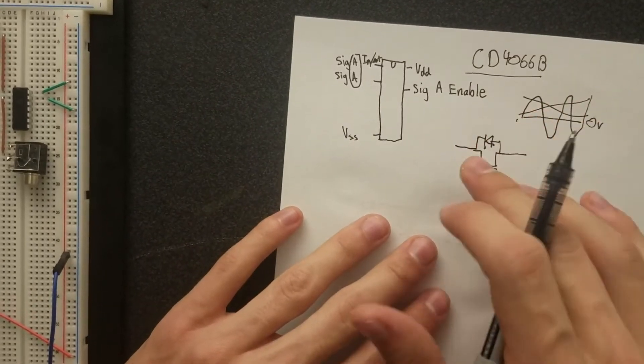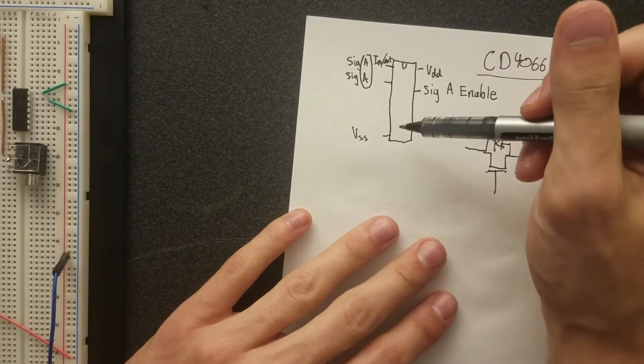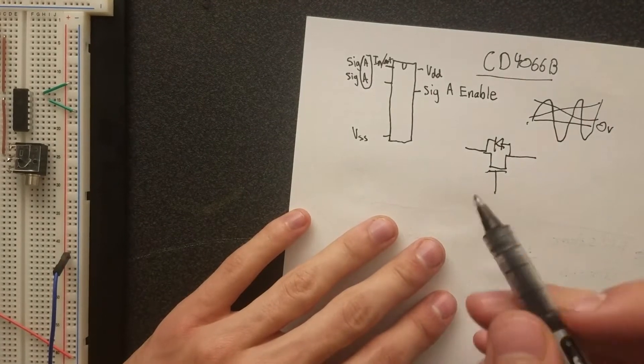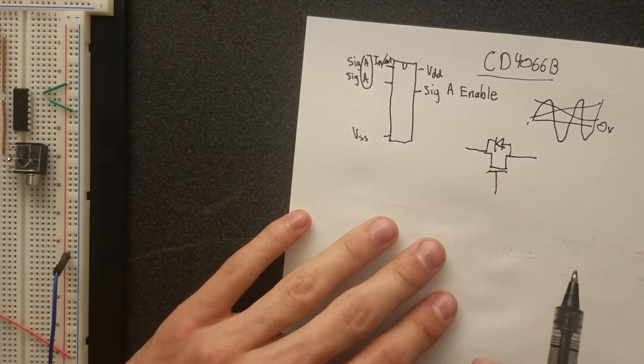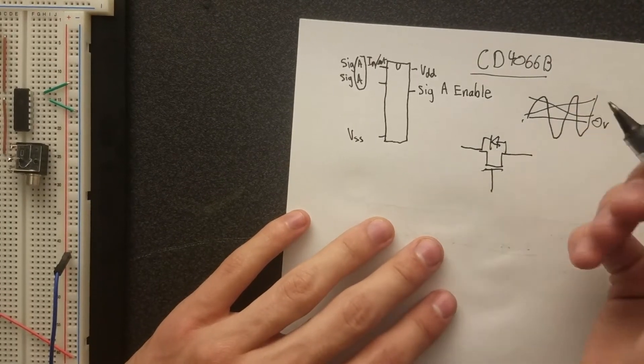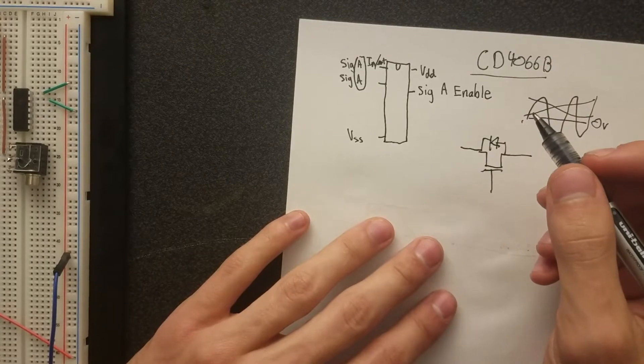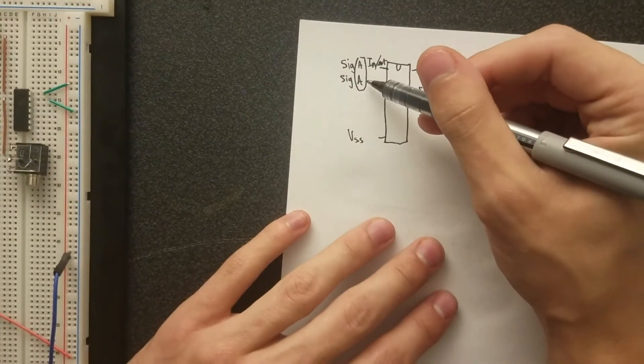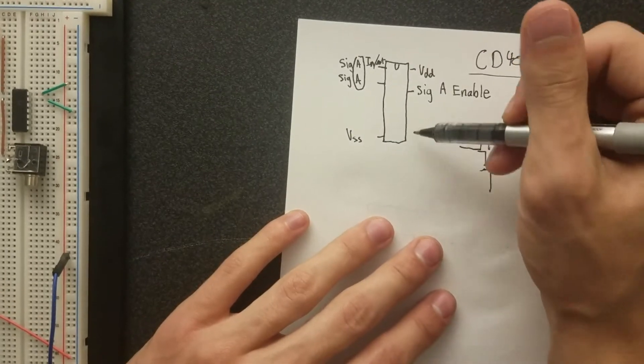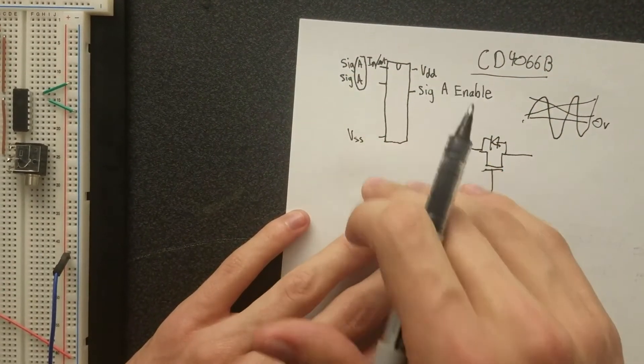So, that's why you can't just use a normal MOSFET, you have to use a chip like this one, which is a CMOS quad bilateral chip. And, as far as I understand, the bilateral part is the part that's important here. Quad just means it has four of these, so it has signal A, signal B, signal C, and signal D. So, it can control four different signals.